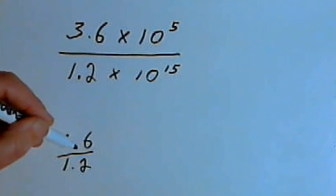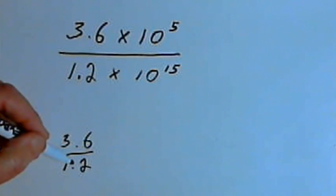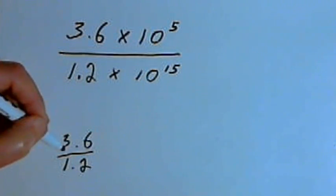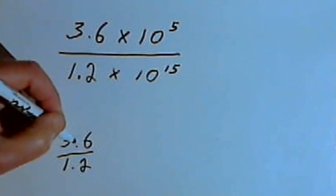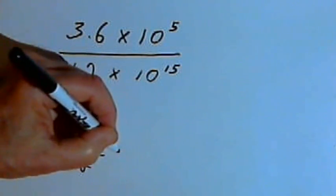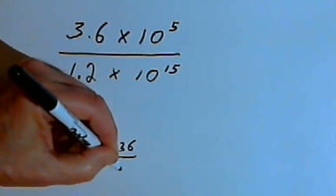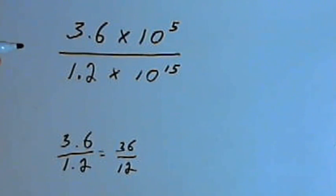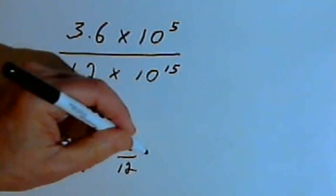We've got 3.6 divided by 1.2. A nice thing to do when you've got a fraction with decimals in the numerator and the denominator is multiply the decimals out. So if I multiply both the numerator and the denominator by 10, I'm just gonna get 36 over 12. And 36 over 12, well that's just 3.